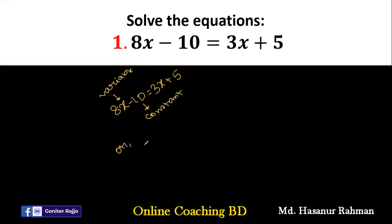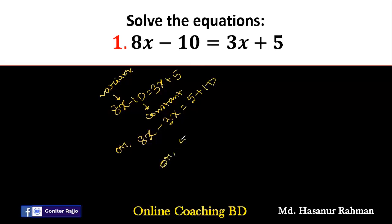So we have to write 8x. If we want to move 3x to this side, the sign will change — plus 3x becomes minus 3x. And here 5; if we want to move minus 10 to the other side, that will be plus 10. Now 8x minus 3x is 5x, equal to 5 plus 10, that is 15.